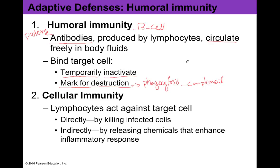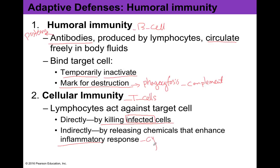Humoral immunity is carried out by B cells. On the other hand, cellular immunity is driven by T cells. It is important for destroying cells of your own body that have been infected — your own cells infected by viruses or bacteria are destroyed by cellular or cell-mediated immunity. T cells also release chemicals that enhance inflammatory responses, creating a stronger defense against the pathogen. One key molecule released is called cytokines.